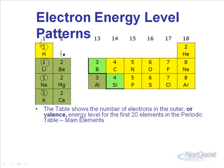When we go to group 2, there's 2. Group 13, there's 3. Group 14, there's 4. Group 15, there's 5, and so on up to group 18. The only exception is helium, but all of the elements in group 18 — our noble gases — have a full valence shell, or valence energy level.